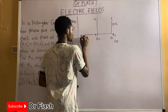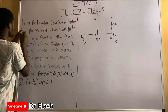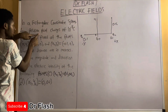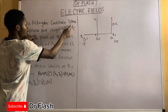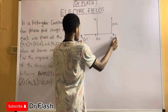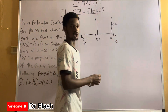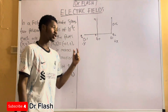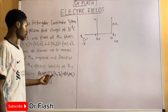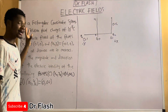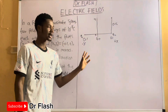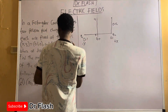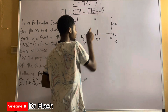Remember we had charge q2 here and charge q1 here — these are the initial charges from the question. The question states: in a rectangular coordinate system, two positive point charges of 10 to the power of minus 8 coulombs. Both q1 and q2 have the value 10^-8. You have to find the electric field strength at the given point.